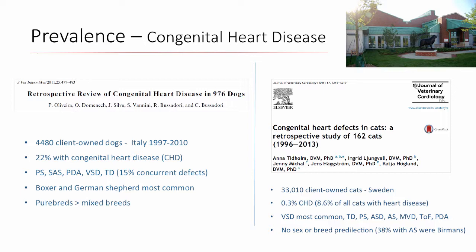That cat study had about 33,000 cats; only a very small percent — 0.3 percent — had congenital heart disease, representing about 8 percent of the total cats with heart disease in that study. The most common defects were VSD, pulmonic stenosis, ASD, and aortic stenosis. So apparently a much smaller percentage of congenital heart disease exists in cats compared to dogs in these referral population studies.